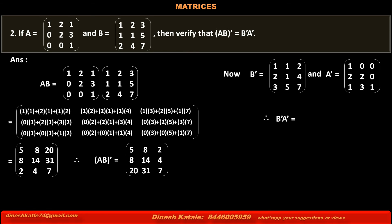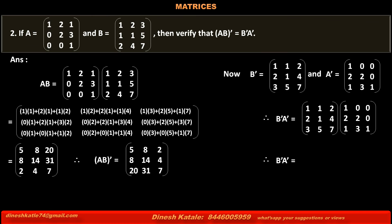Therefore, the product of matrices BᵀAᵀ is equal to matrix Bᵀ [1, 1, 2; 2, 1, 4; 3, 5, 7] multiplied by matrix Aᵀ [1, 0, 0; 2, 2, 0; 1, 3, 1]. Multiplying these two matrices, we get the matrix [5, 8, 2; 8, 14, 4; 20, 31, 7]. Therefore, we have verified that (AB)ᵀ is equal to BᵀAᵀ.